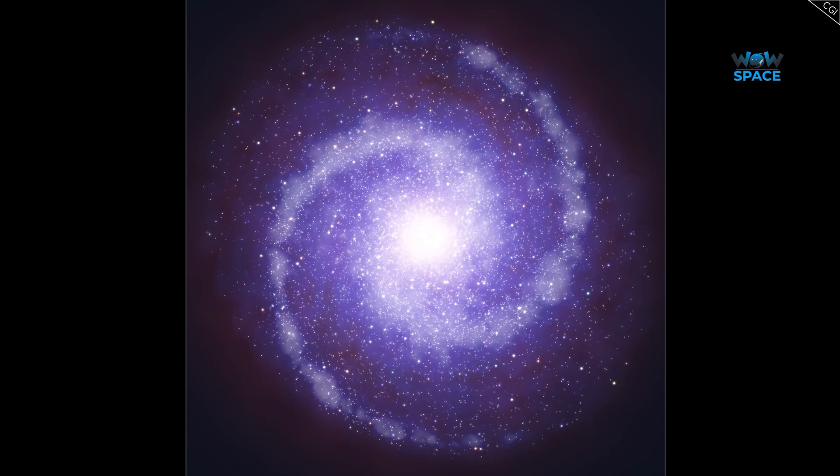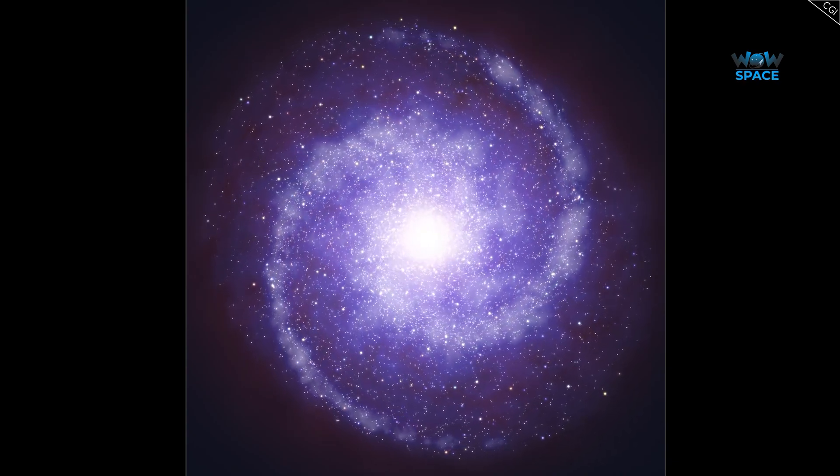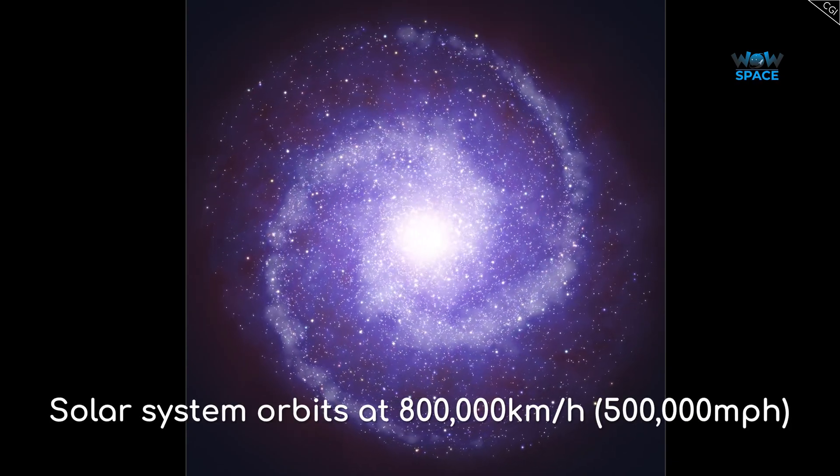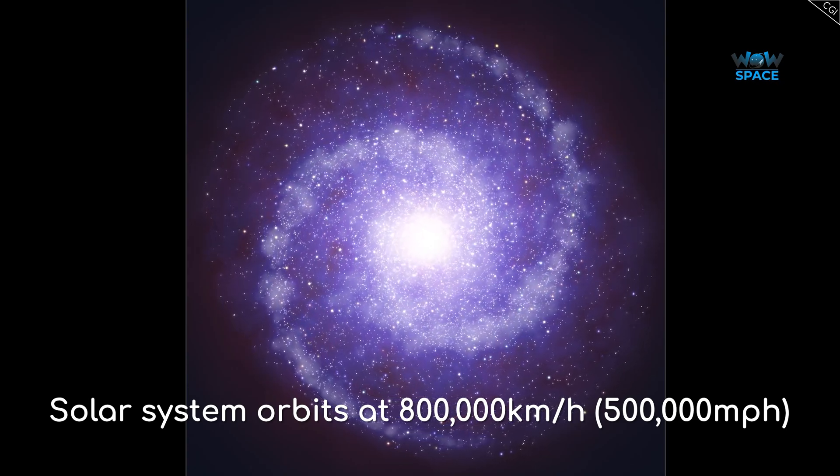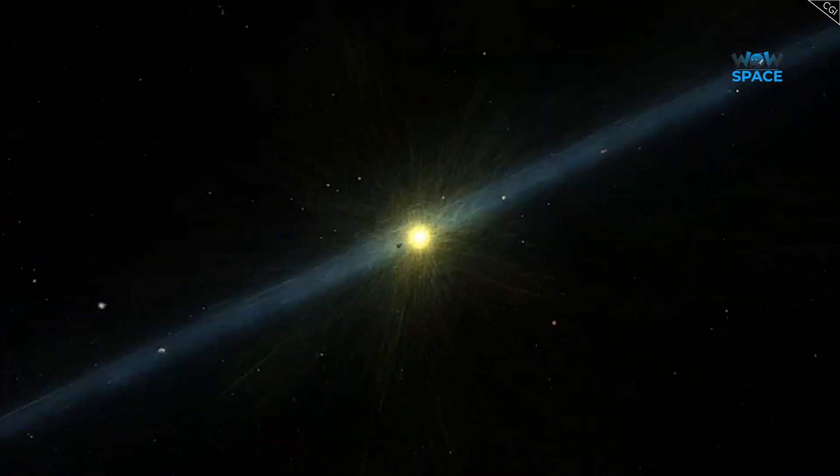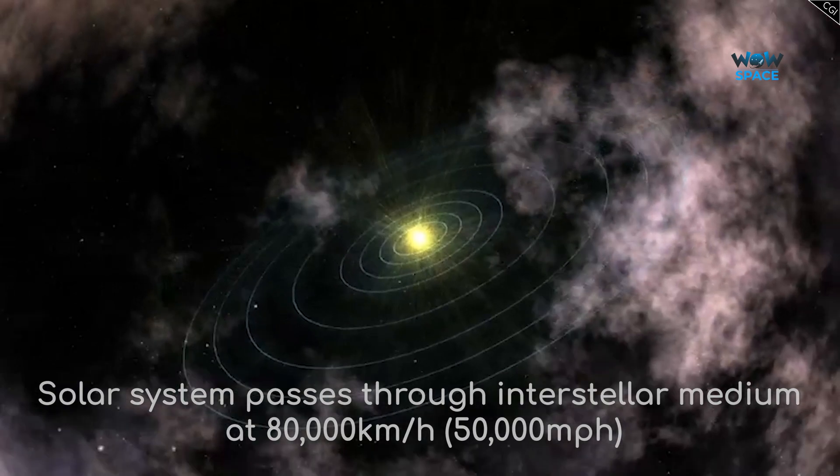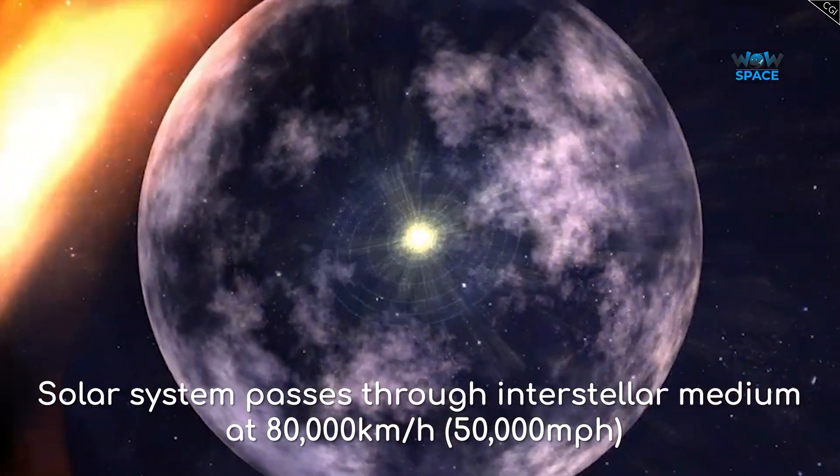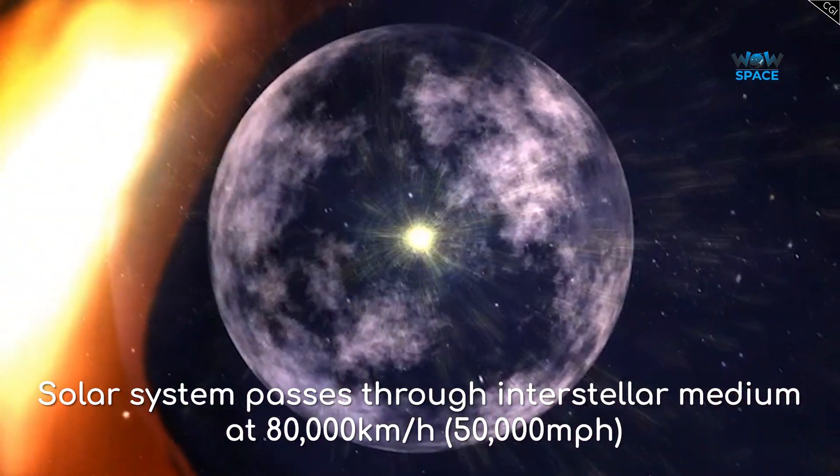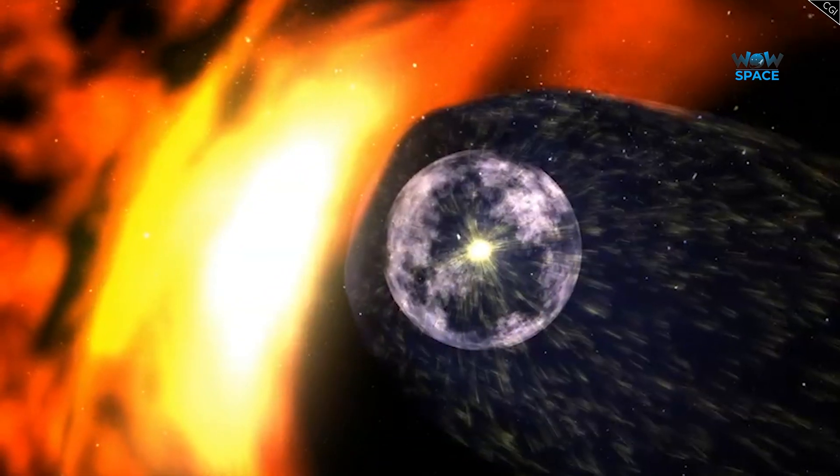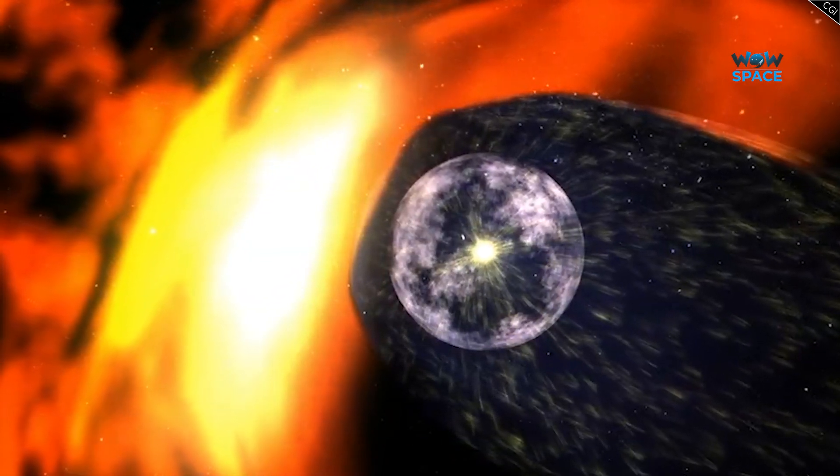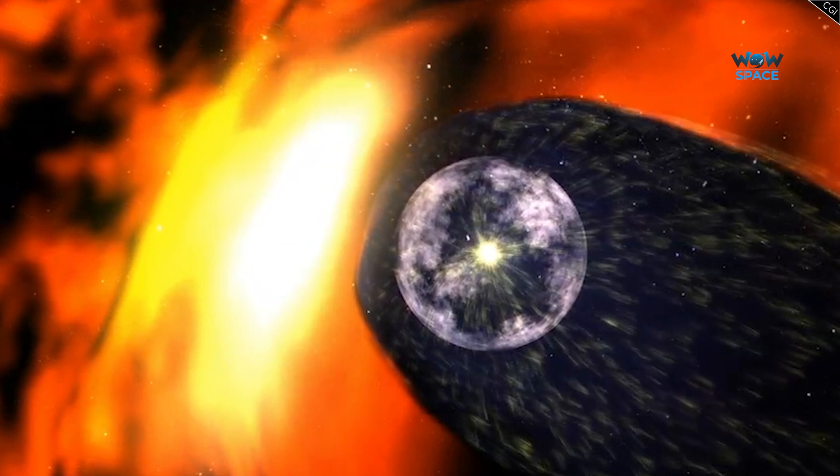As the solar system orbits the centre of the Milky Way, it travels at over 800,000 kilometres per hour. As it moves, it passes through what is known as the interstellar medium at relative speeds of 80,000 kilometres an hour. This creates a kind of wind effect on the magnetic field of the Sun, leaving a tail in the interstellar wind's wake.